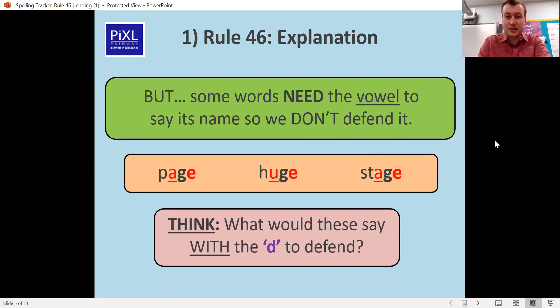But some words need the vowel to say its name so we don't defend it. For example, it's not padge, it's page because it's that A sound, we keep it just an A on its own. Huge is that U, and stage it's the A. So it depends on the sound the vowel makes. If it's that long sound almost like it's a split A stage, then we don't add a D, but if it's that A sound like badge, we do need the D.